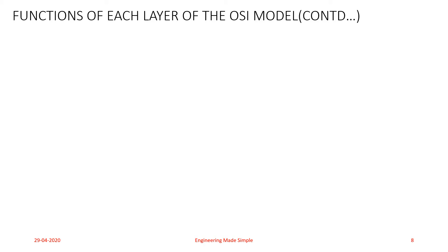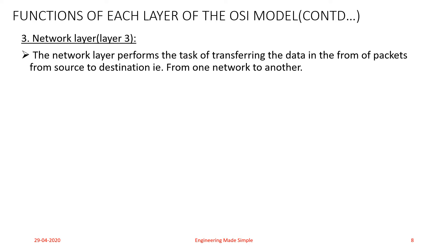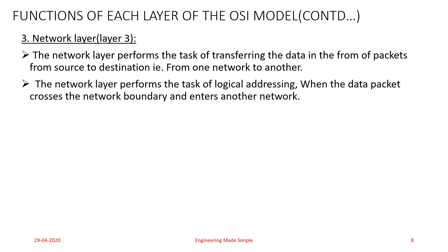Now we will study the functions of the Network layer, which is Layer 3 of the OSI model. The Network layer is responsible for source-to-destination delivery of packets, possibly across multiple links. It performs the task of transferring data in the form of packets from source to destination, i.e., from one network to another, and performs the task of logical addressing when the data packet crosses a network boundary and reaches another network.